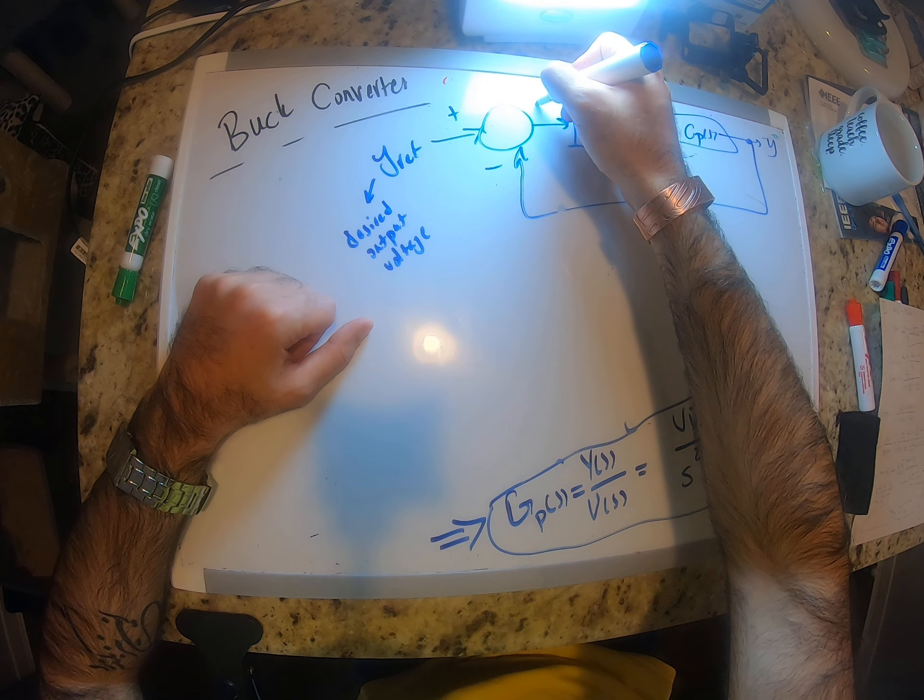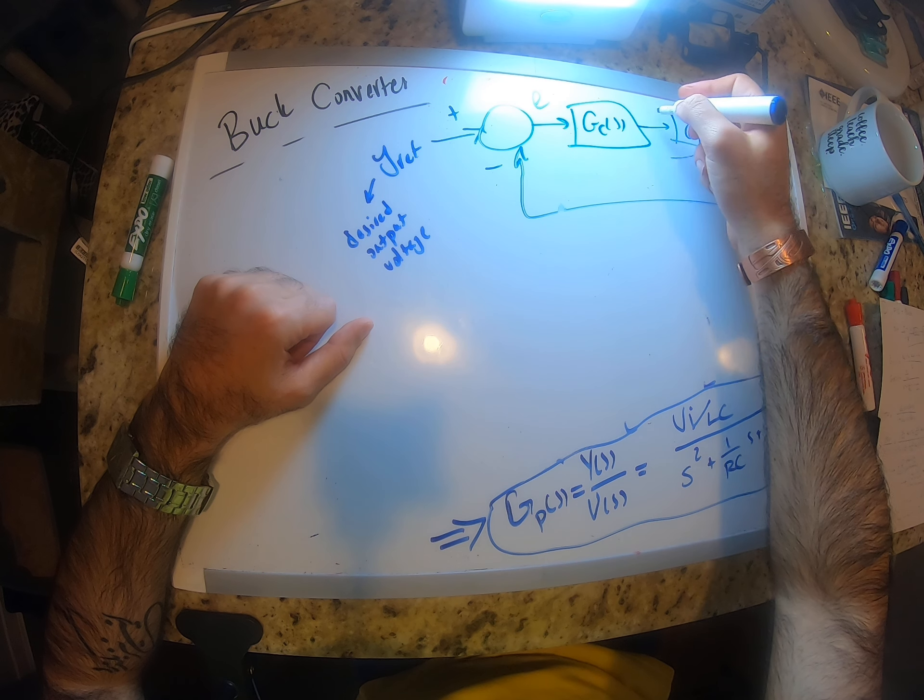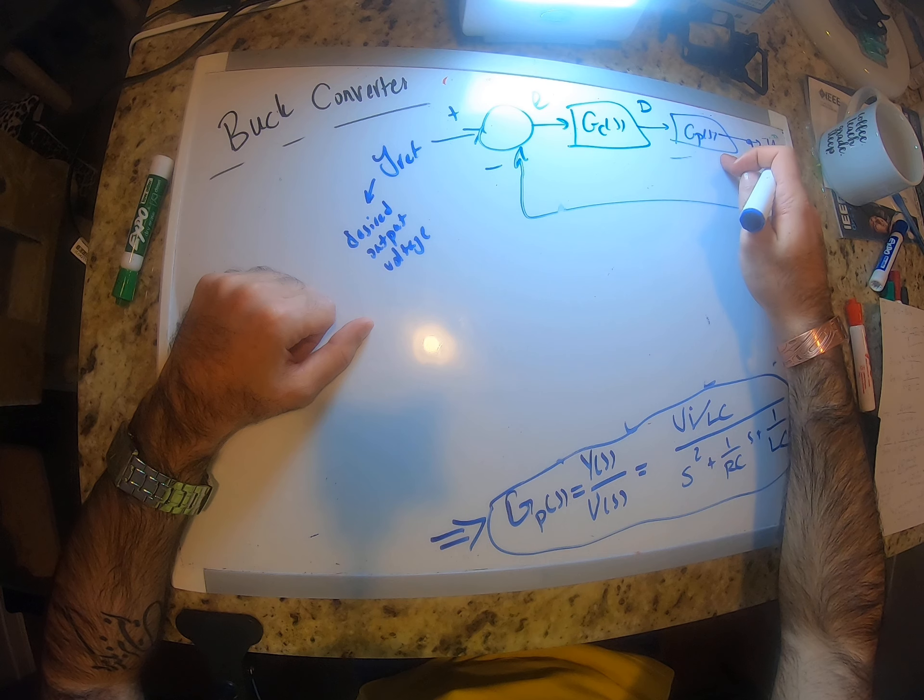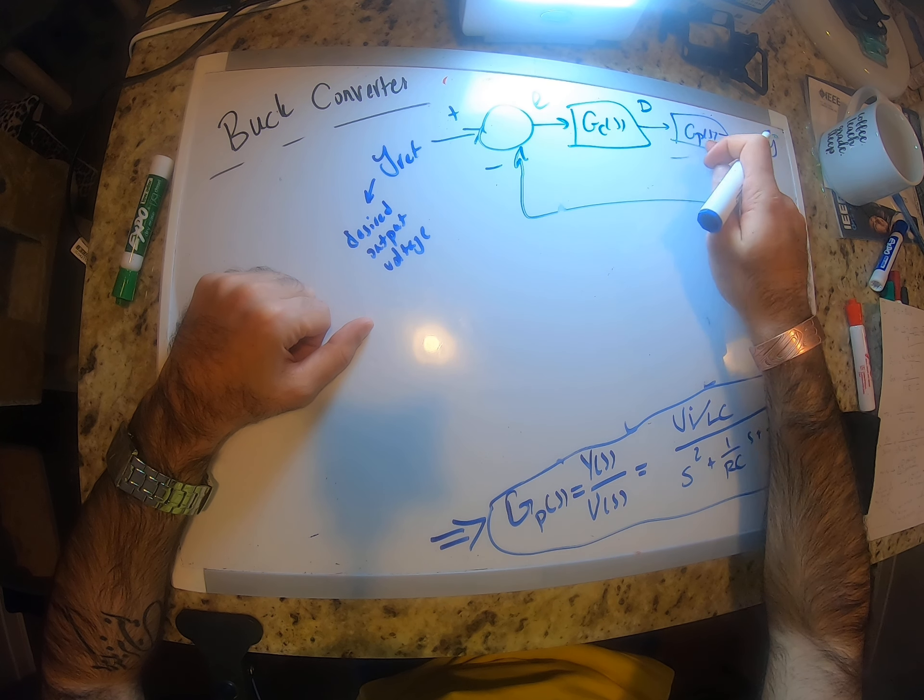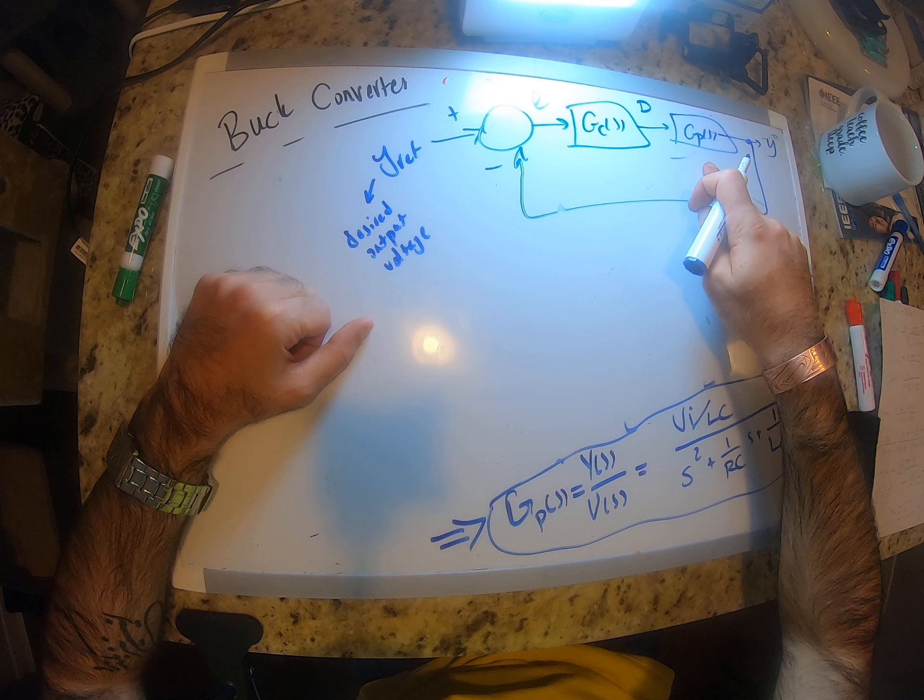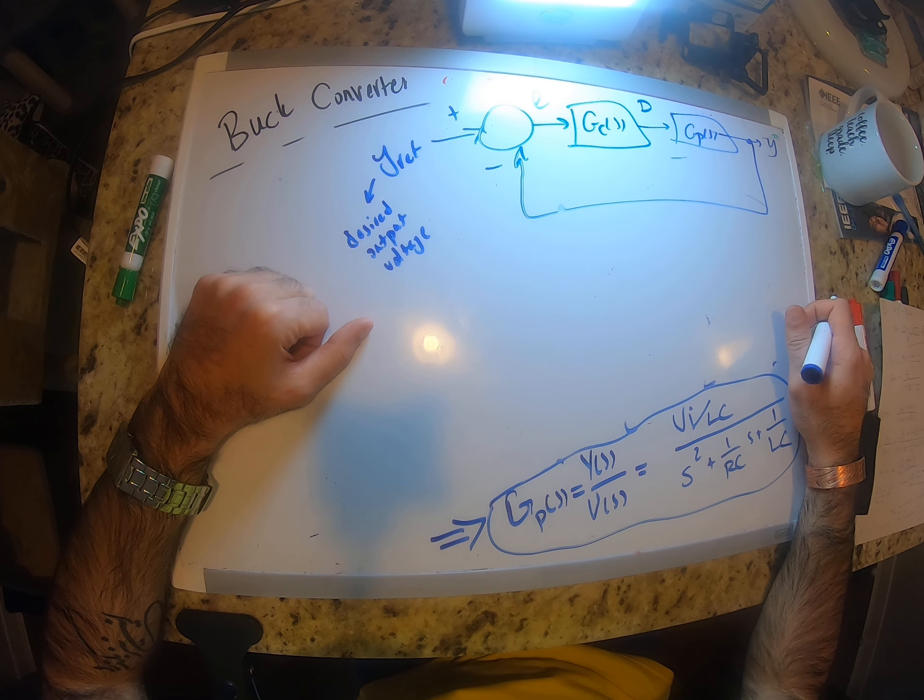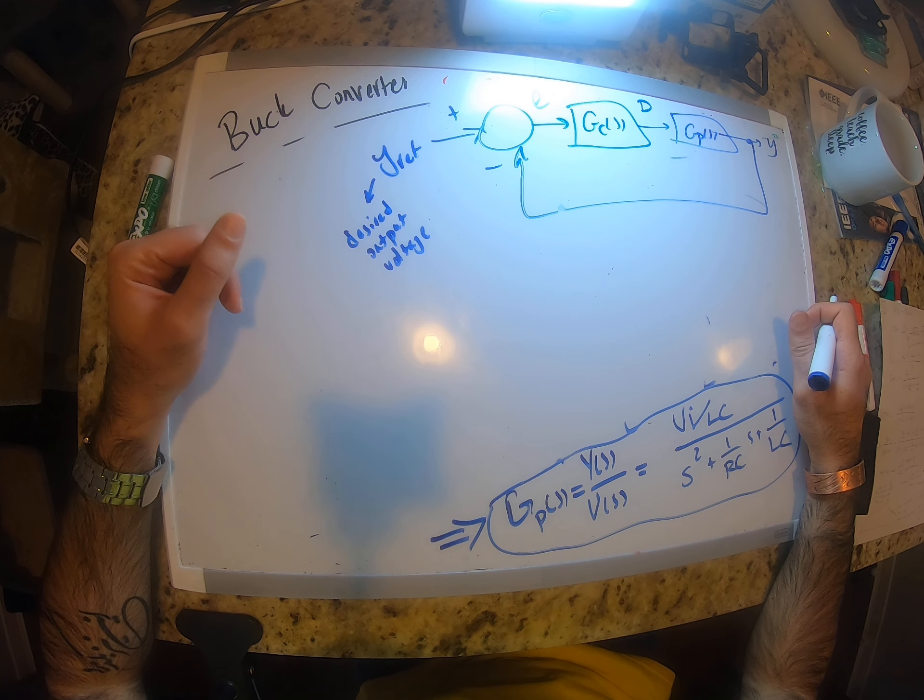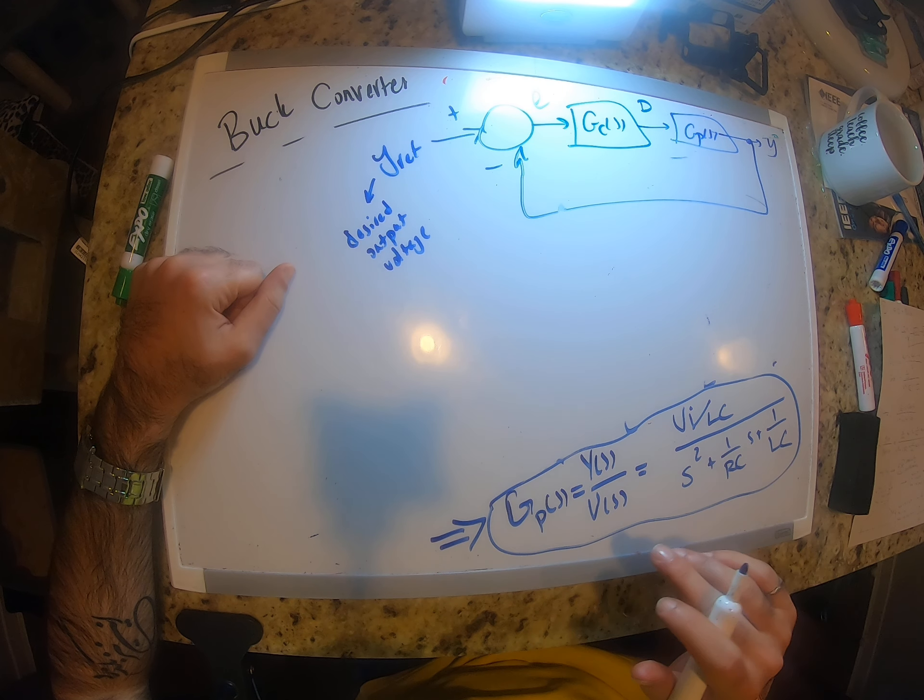Okay, this is the error, this is the duty cycle that you want to supply to the gate of the switch, right? And it would give us the output. So this is what we want to have. I'm just going to do a very quick example and then finish this video here.